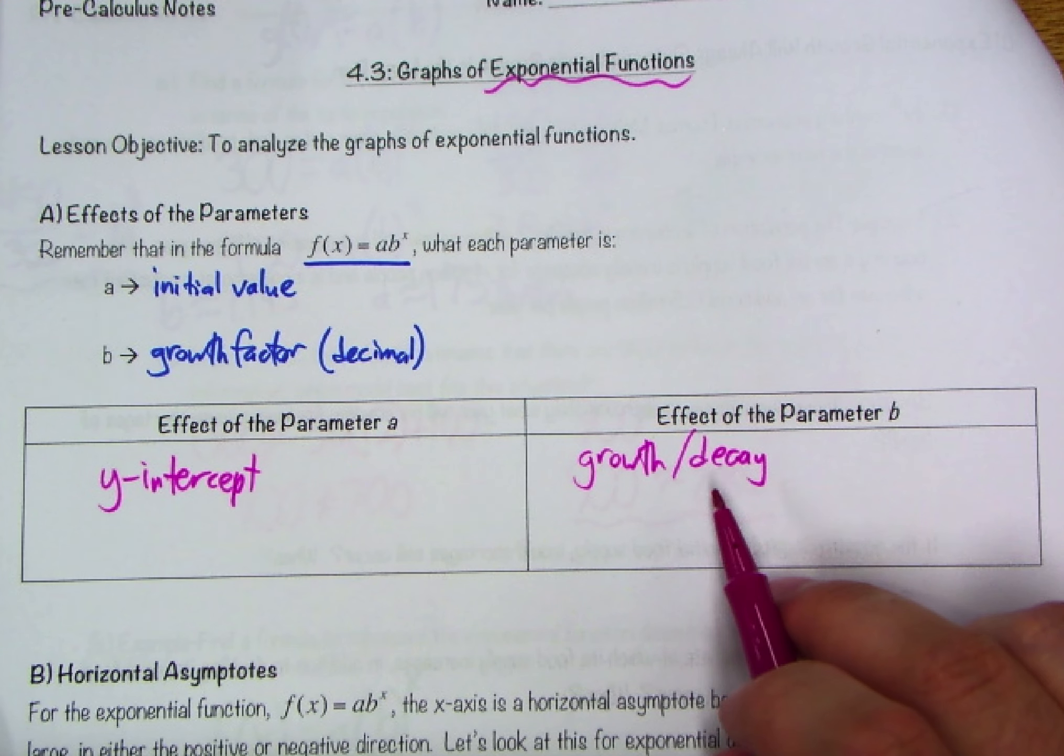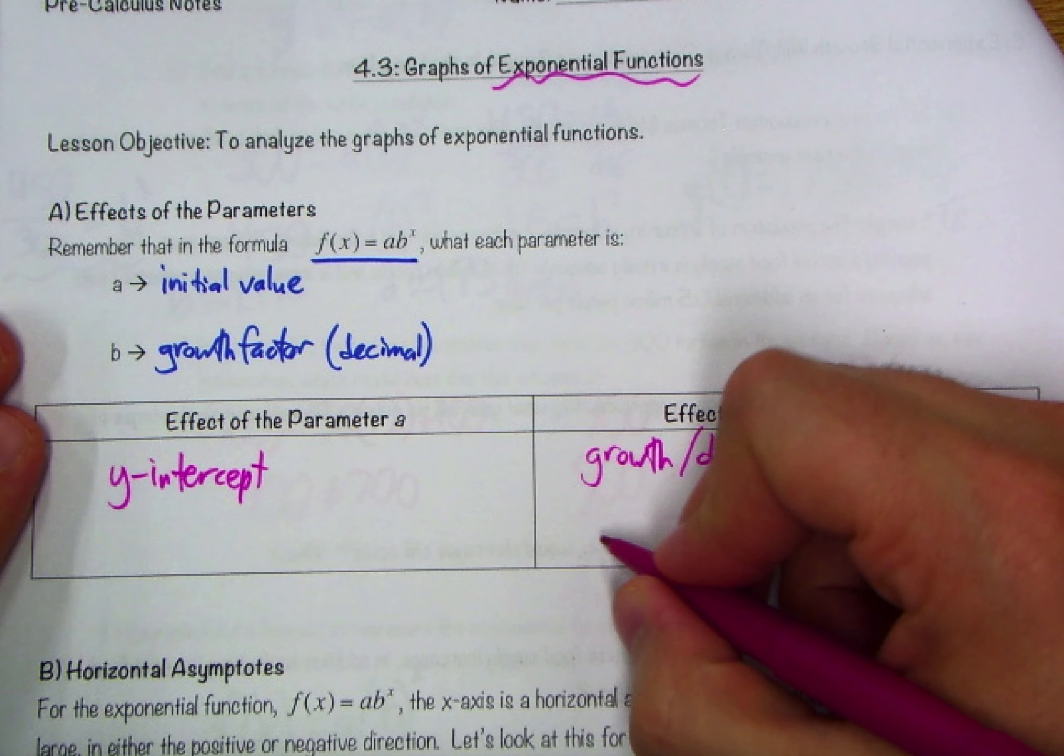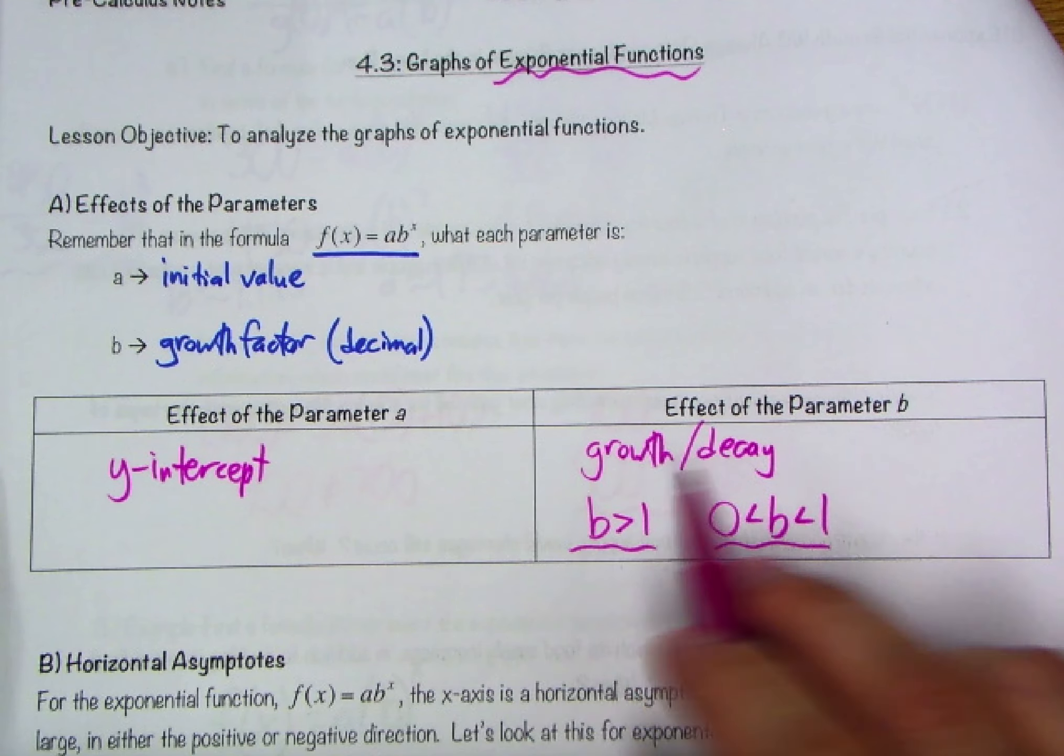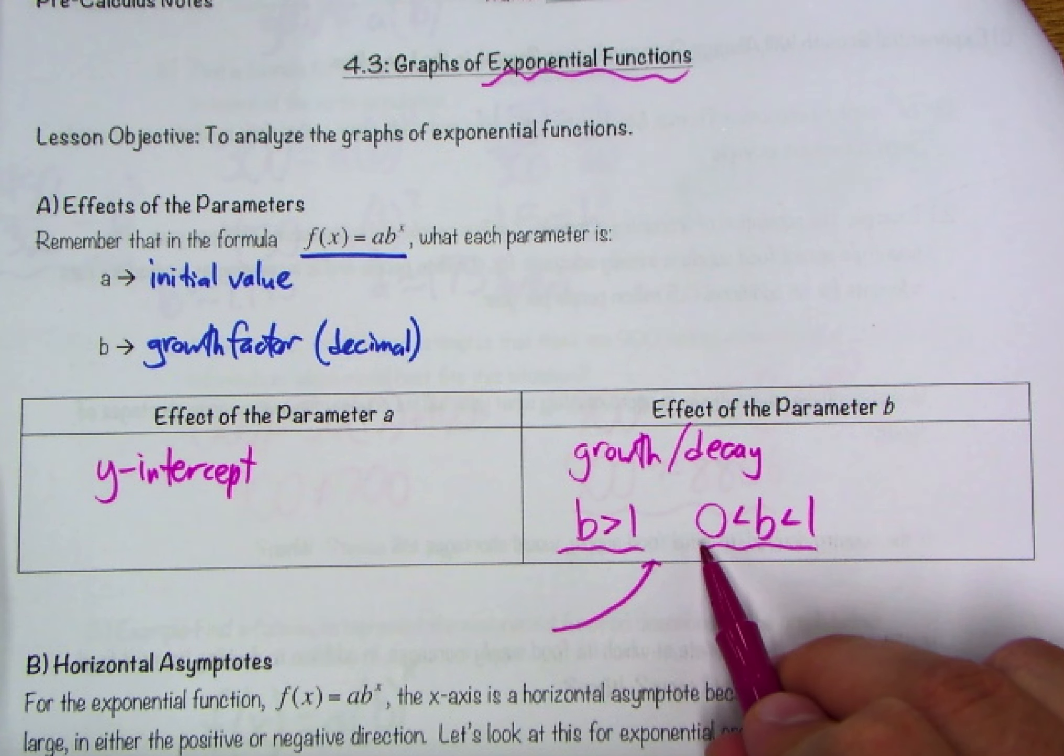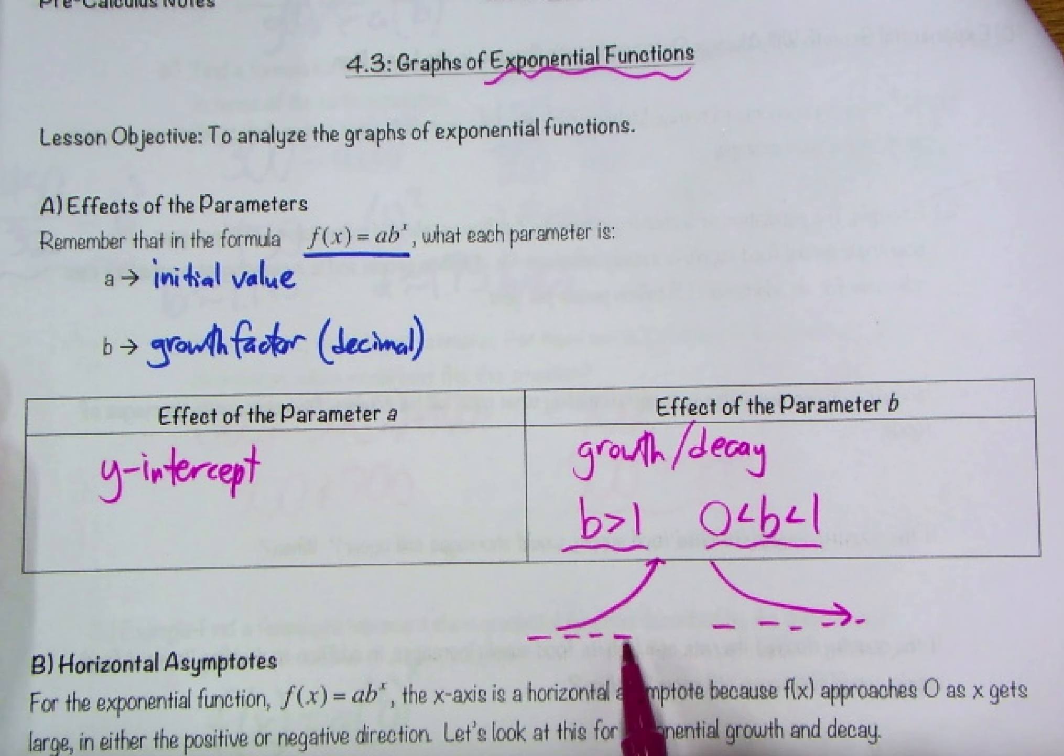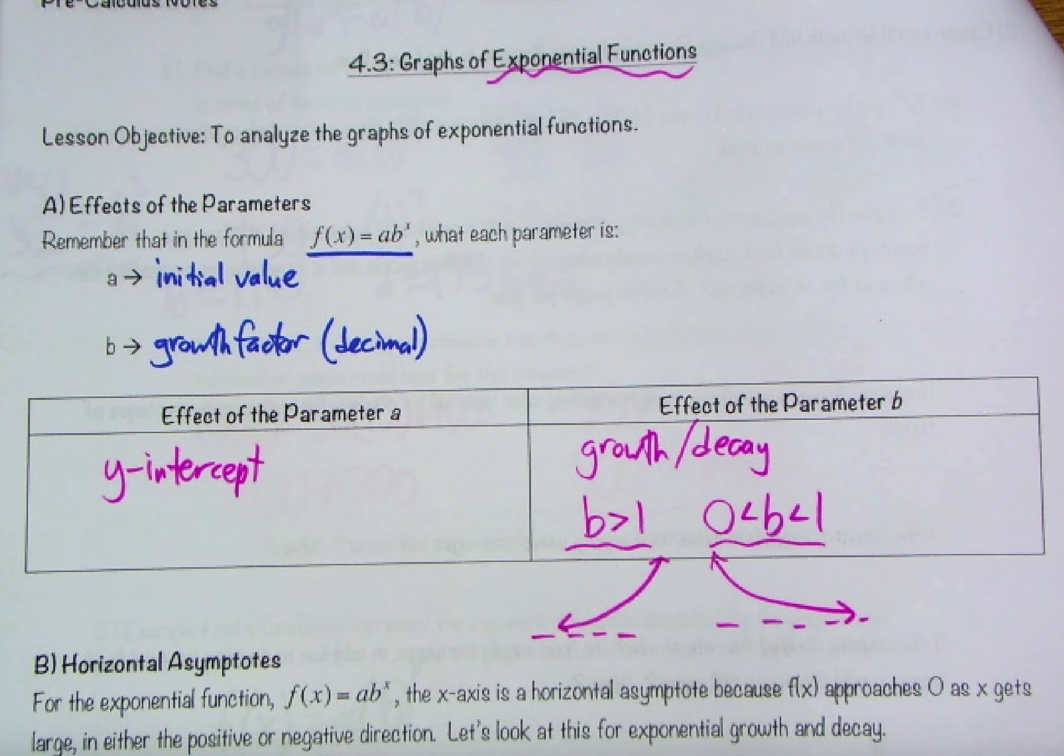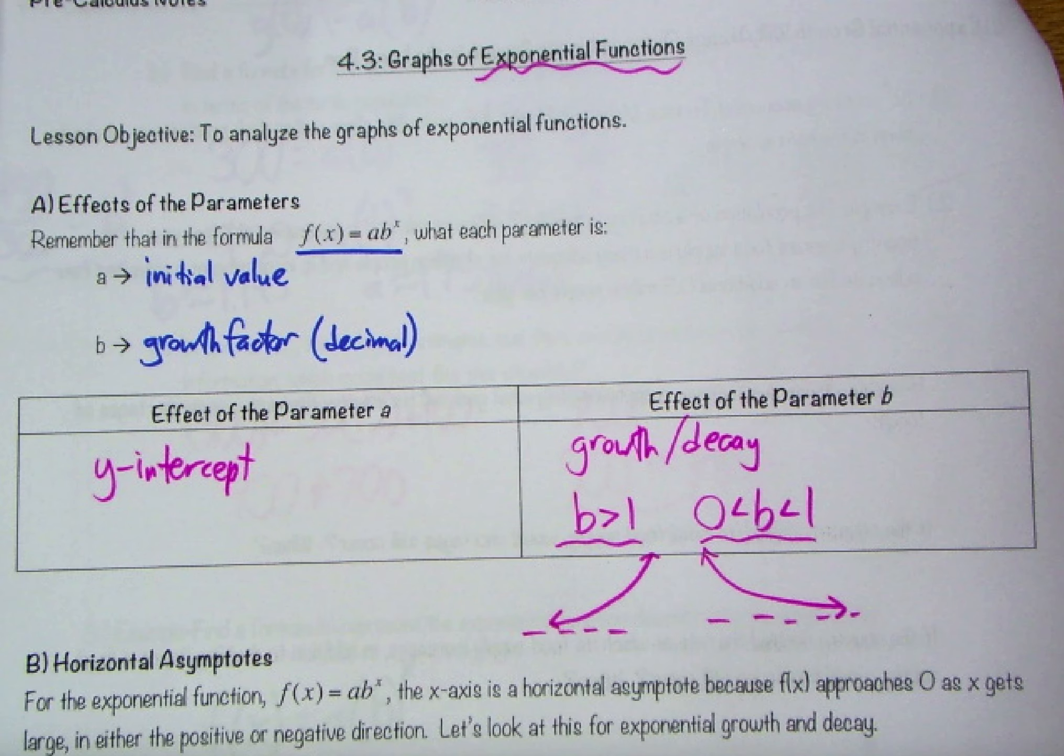It was growth whenever b was larger than 1. It was decay whenever b was between 0 and 1. Growth is when b was greater than 1. Decay is when 0 is less than b which is less than 1. But what does that mean graphically? In the case of growth, that means with consecutive inputs we're going up. With decay, with consecutive outputs we're going to be going down.